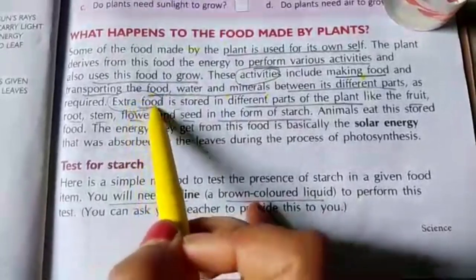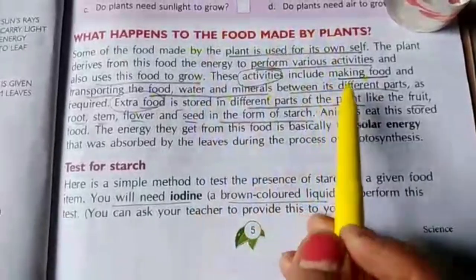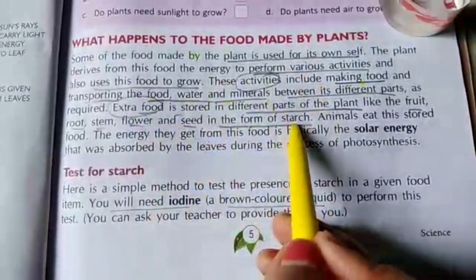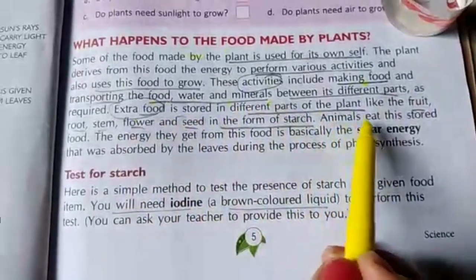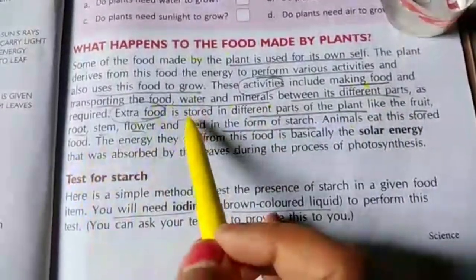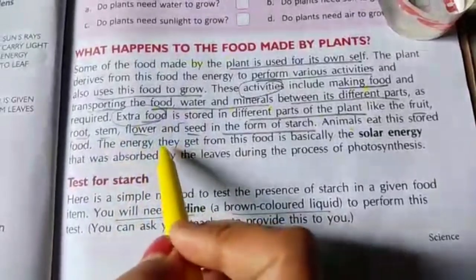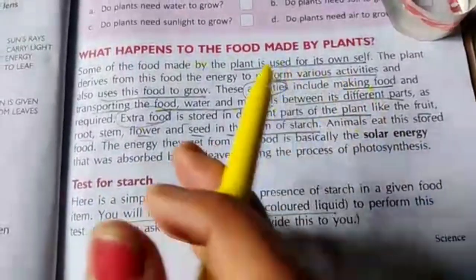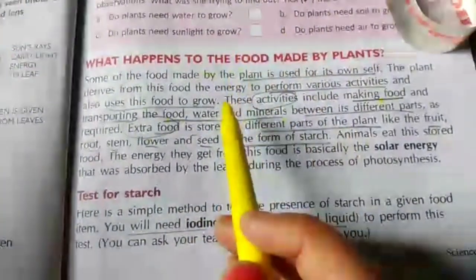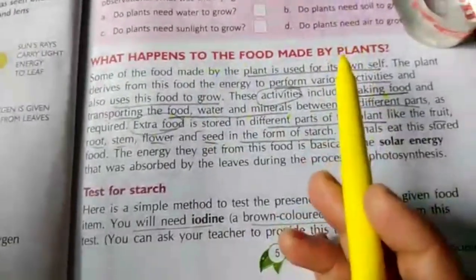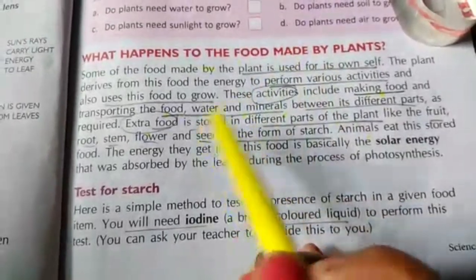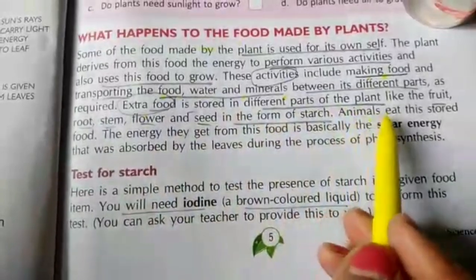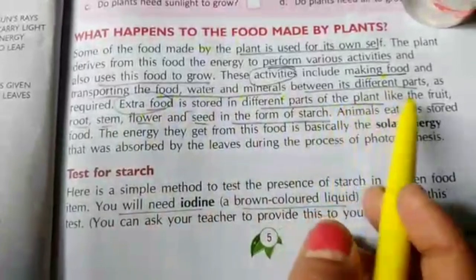Extra food that is left over is stored in different parts of the plant — in the fruits, roots, stem, flowers and seeds — in the form of starch. Animals eat this food stored in the different parts of the plant. The energy they get from this food is basically solar energy that was absorbed by the leaves during the process of photosynthesis.